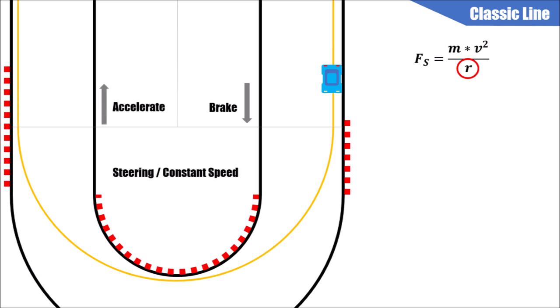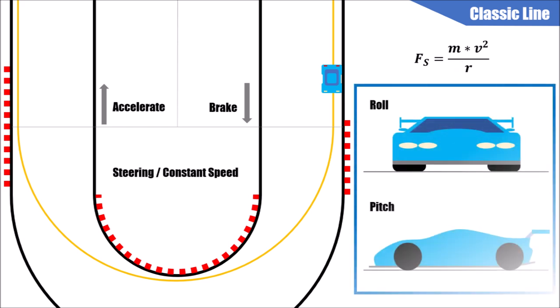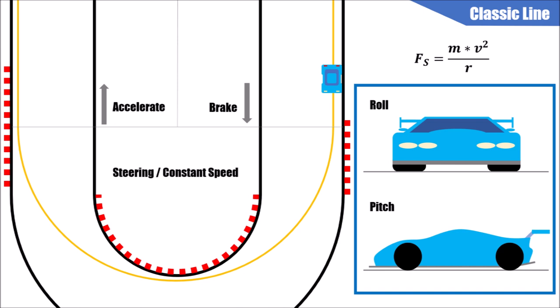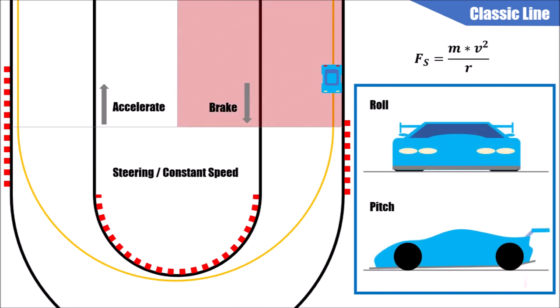After we finish steering, we accelerate in a straight line. Now let's have a closer look at how the car body moves during these three stages. Let's say this car has a splitter, front diffuser, rear diffuser, and rear wing. During straight-line braking, our car is pitching forward — the front gets closer to the street, the rear further away.